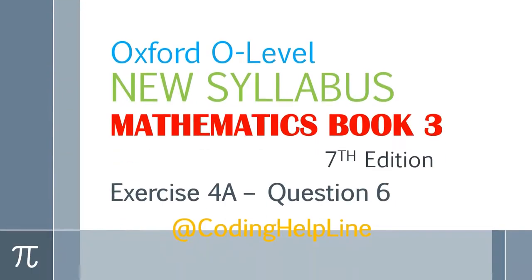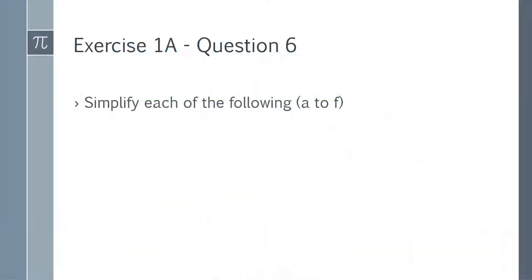Hello guys, welcome to my channel. In this video I am going to solve question 6 of exercise 4a from book 3 of mathematics for O levels. Question 6: simplify each of the following — it has 6 parts.